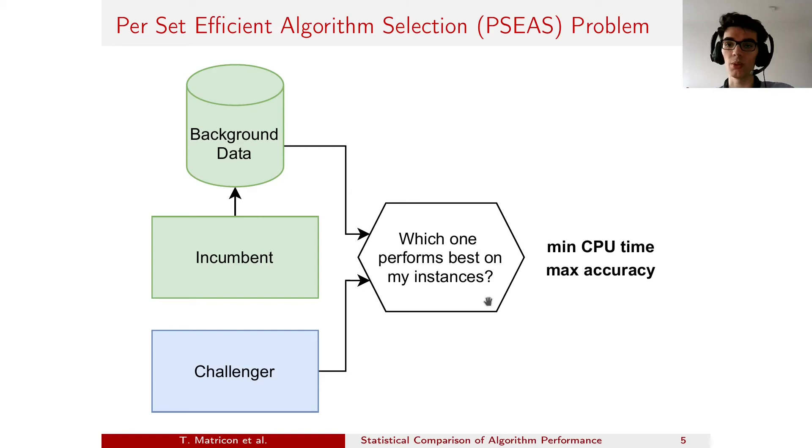We have two objectives. We want to minimize the cost, that is we want to minimize the CPU time used by the challenger. And we also want to maximize the accuracy of the comparison between the incumbent and the challenger.